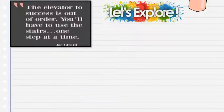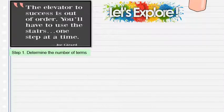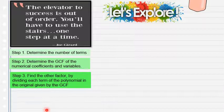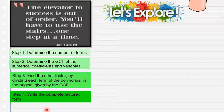Let's explore. Before we do, remember: 'The elevator to success is out of order. You have to use the stairs one step at a time,' according to Joe Girard. Step 1: determine the number of terms. Step 2: determine the GCF of the numerical coefficient and variables. Step 3: find the other factor by dividing each term of the polynomial by the GCF. Step 4: write the complete factored form.